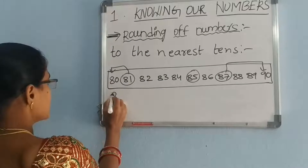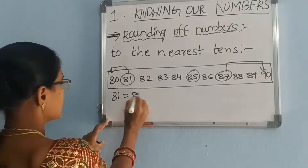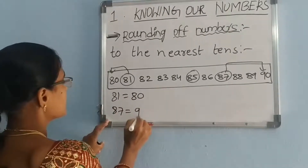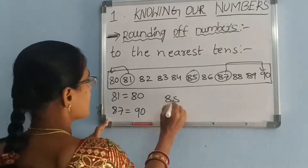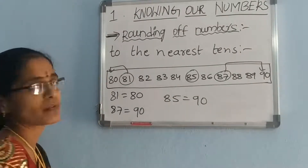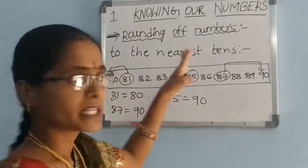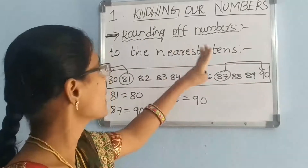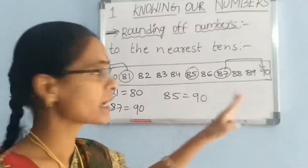So, 81 rounds to 80, 87 rounds to 90, and 85 rounds to 90. Once again, rounding of numbers to the nearest tens.